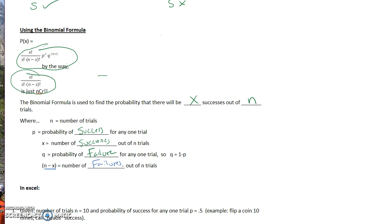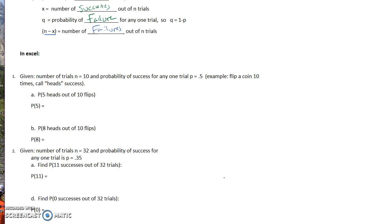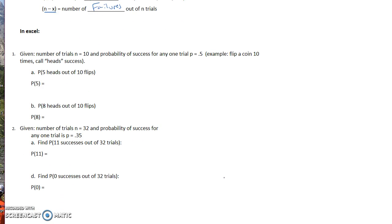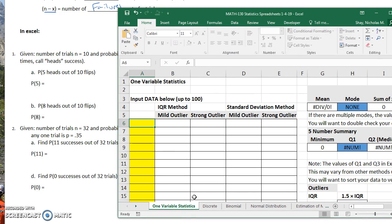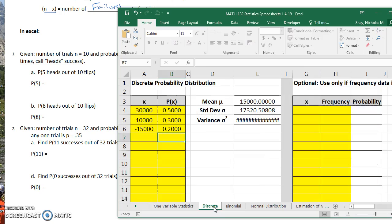So given that a number of trials N is equal to 10, find the probability of successes for any one trial. All right, so let me get to these. I'll work through these. We're going to work through these using our Microsoft Excel spreadsheet. So when you open this spreadsheet up, what you see is this first one is our one variable statistics. This is where we get mean, median, mode, standard deviation, so on and so forth. The next one was our discrete probability distribution.